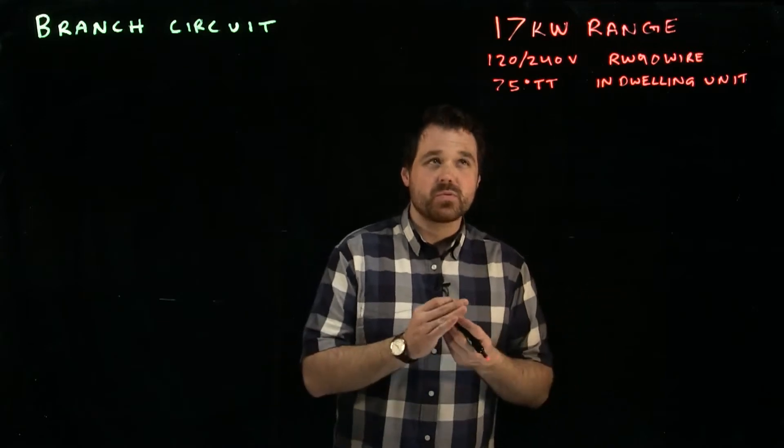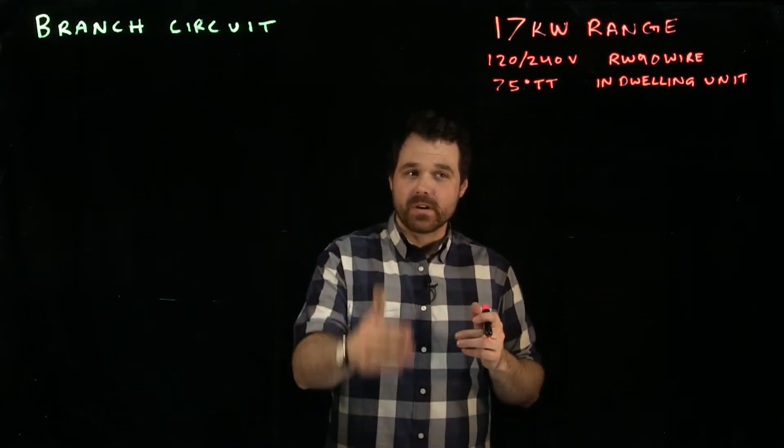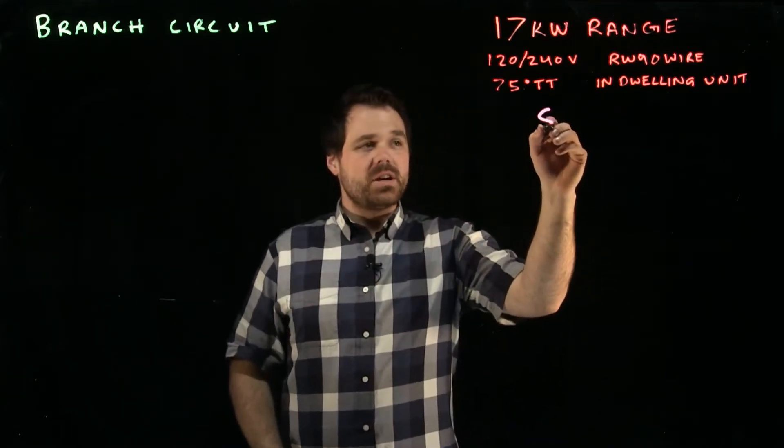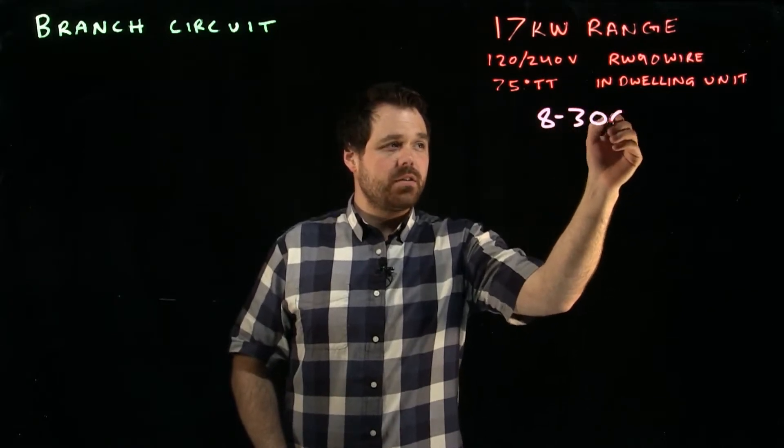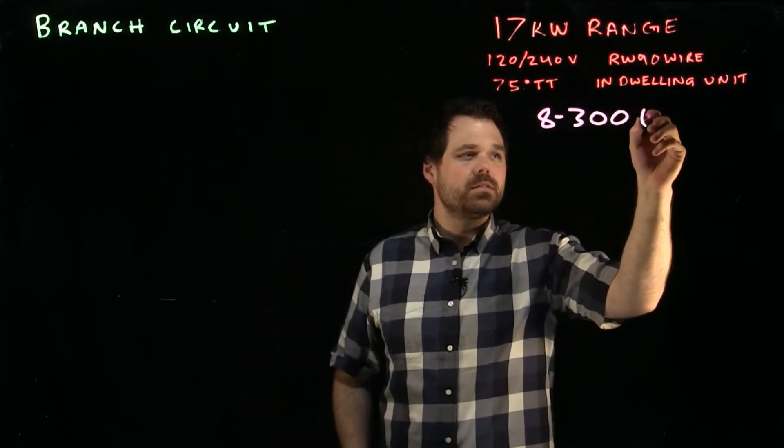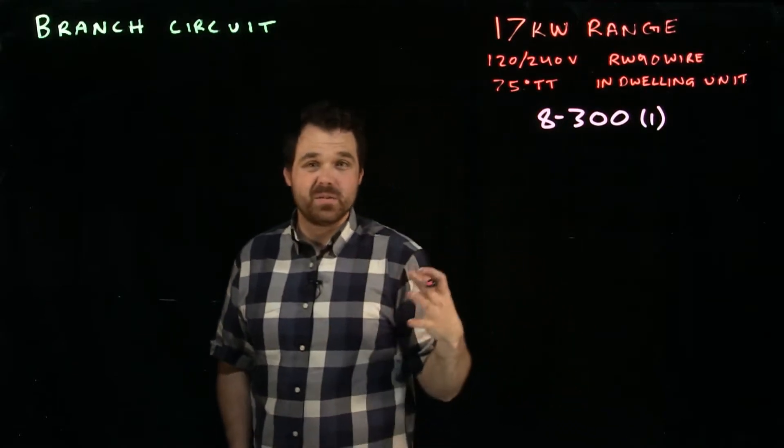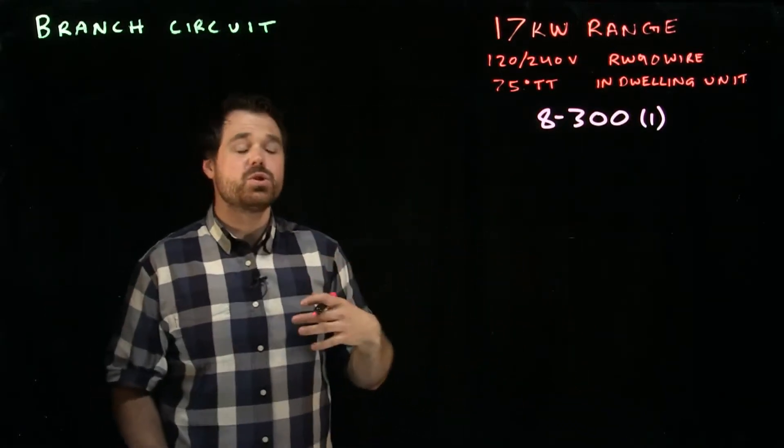So there is a special rule in the code book that deals with ranges branch circuits, it's 8-300. Specifically, sub-rule one talks about ranges in dwelling units. Now it gives us two options.